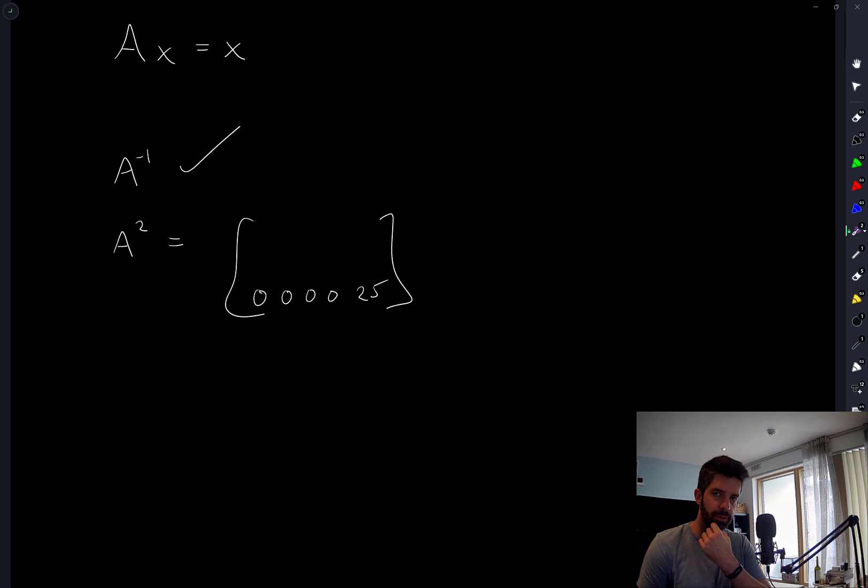When you have the lower triangle all zeros, I think the determinant is just the product of the diagonal elements. Yeah. So the determinant of A is just going to be 5 times 4 times 3 times 2 times 1, which is 120.